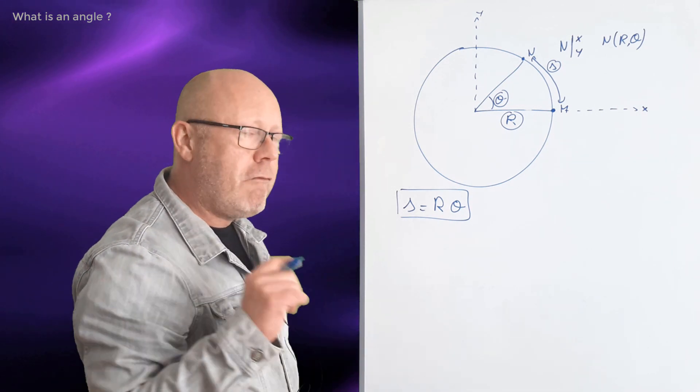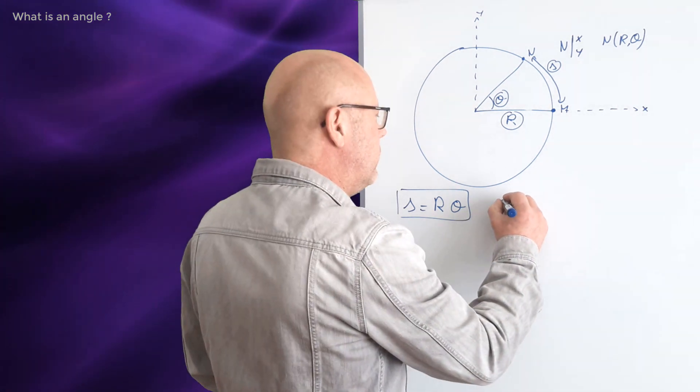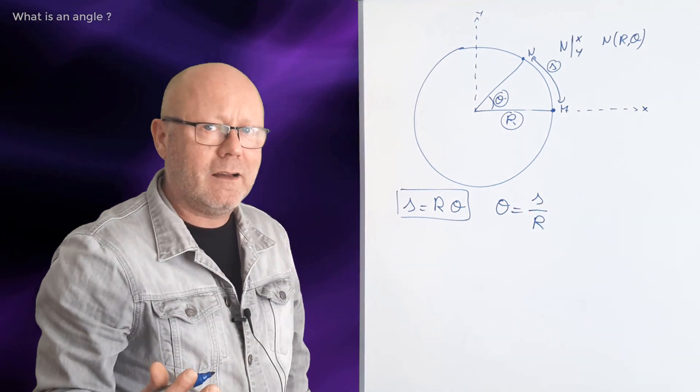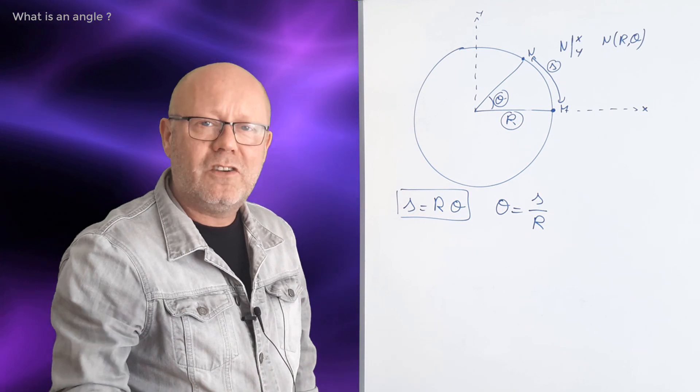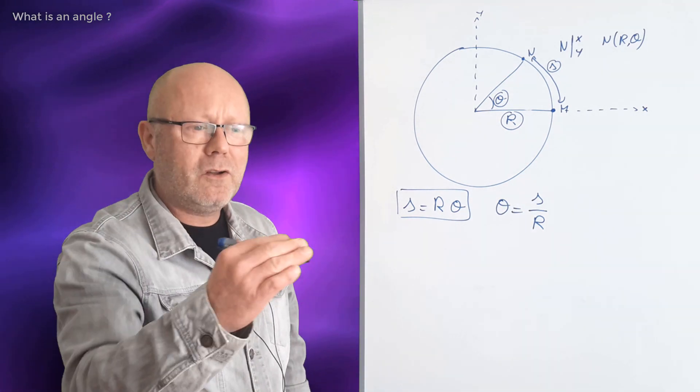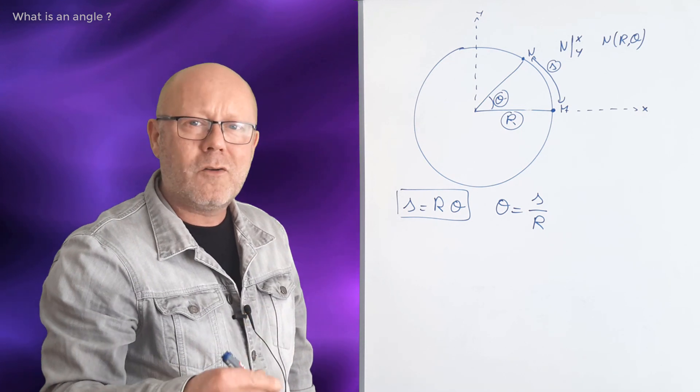Now, we can rewrite this relation as theta equals s over r. That gives us information about theta. Theta, the angle, is actually just a ratio of distances. Meters over meters. An angle has no unit.